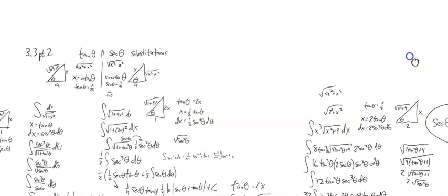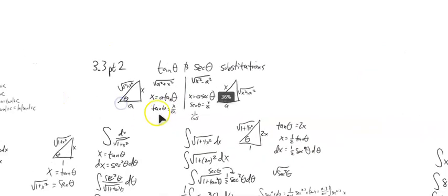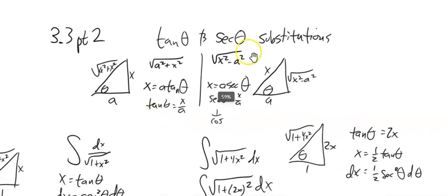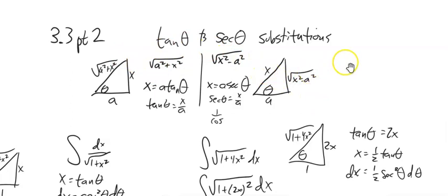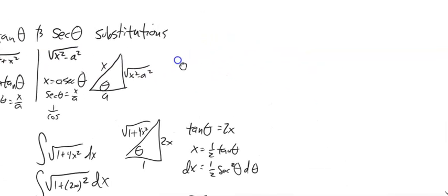So again, a big idea: two more substitutions we can do to make certain classes of integrals easier. These handle √(a² + x²) using tangent substitution and √(x² - a²) using secant substitution. A couple of standard manipulation things to keep in mind.